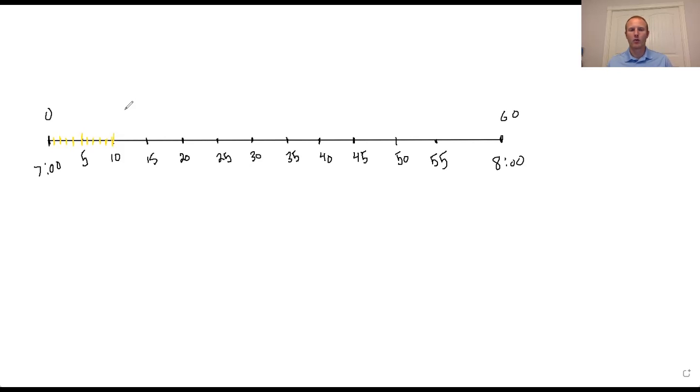The first way you're going to work with this number line today is simply following directions. Those directions are going to say things like put a dot and label it A where it says 7:35. So you'd find 7:35, put a dot, and label it with an A. Then you might be asked to find 7:15 and label it with B. So you'd find 7, 5, 10, 15, and label it with a B. 7:55 label with a C, and one more like 7:20 would be D.